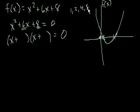Well, 1 times 8 is 8, but 1 plus 8 is 9, so that doesn't work. 2 times 4 is 8, and 2 plus 4 is 6, so that works.